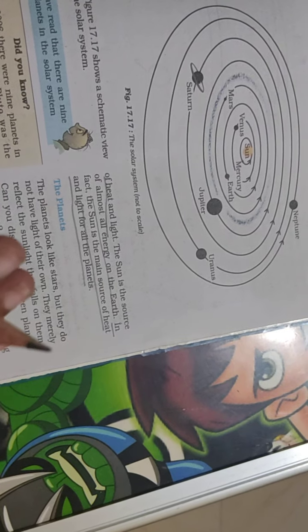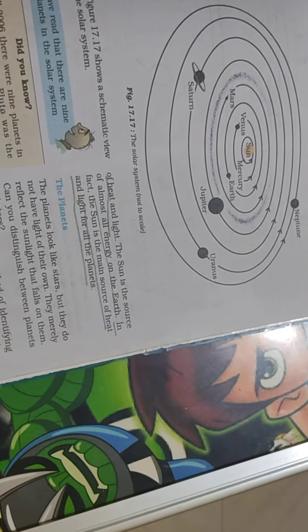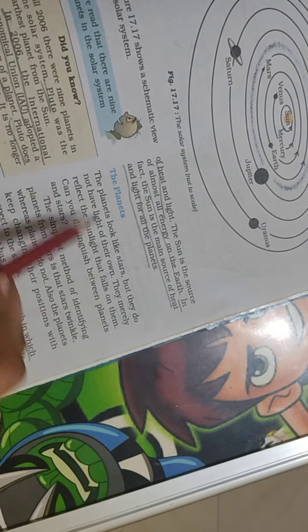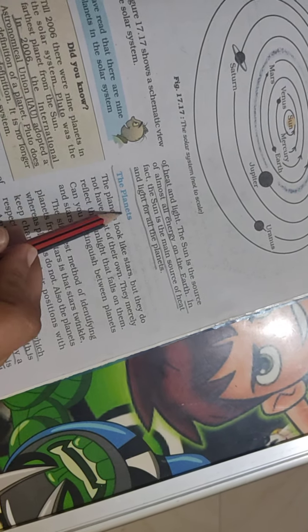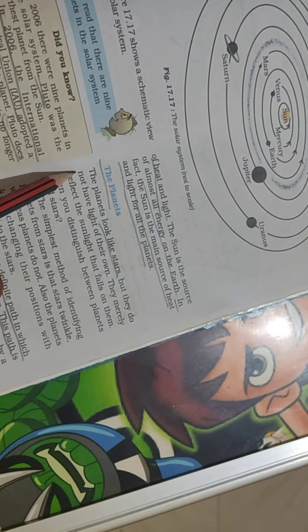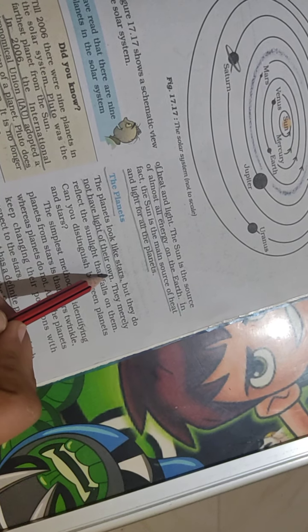The next topic is planets. Planets look like stars, but they do not emit their own light. They merely reflect sunlight that falls on them.